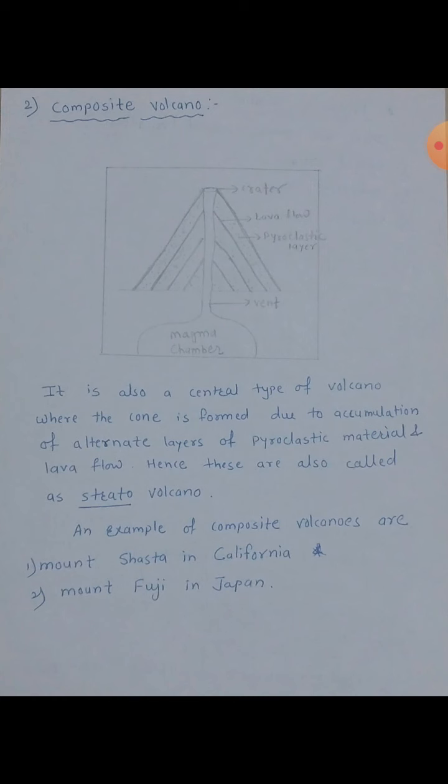So it is also a central type of volcano — haapl lela kashashi center pipe through magma connect zha lela hai, surface vore a lela hai. So it is also a central type of volcano, where the cone is formed due to accumulation of alternate layers of pyroclastic material and lava flow. Alternate layers ahe tachyamadhe — ek tar pyroclastic layers ahe, tadun dusra ahe lava flow.